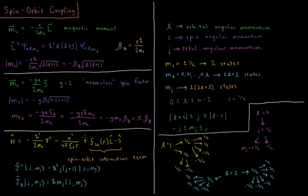The whole point of this discussion is to introduce the quantum number j, which represents the total angular momentum. L² is the orbital angular momentum squared, S is the spin angular momentum, and J is the total angular momentum accounting for both orbit and spin. The operator J² acting on state |j, m_j⟩ gives ħ² j(j+1)|j, m_j⟩, and the z-component J_z acting on |j, m_j⟩ equals ħ m_j |j, m_j⟩, analogous to L_z and S_z.